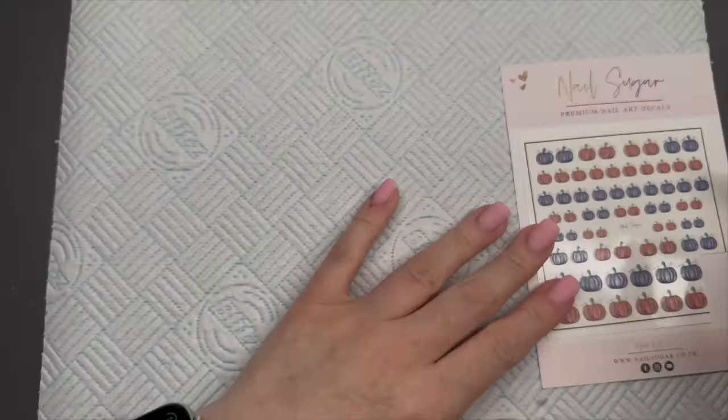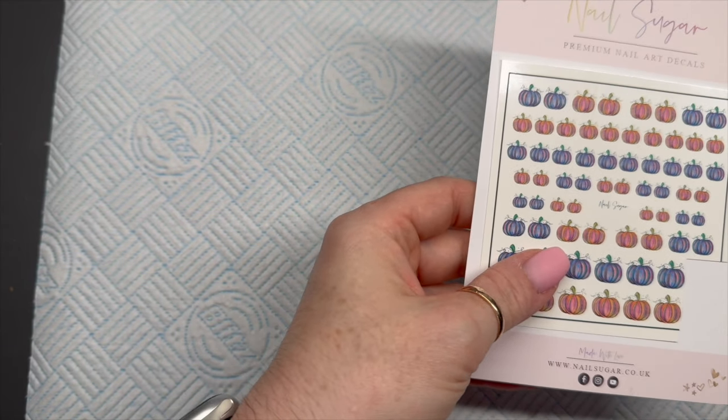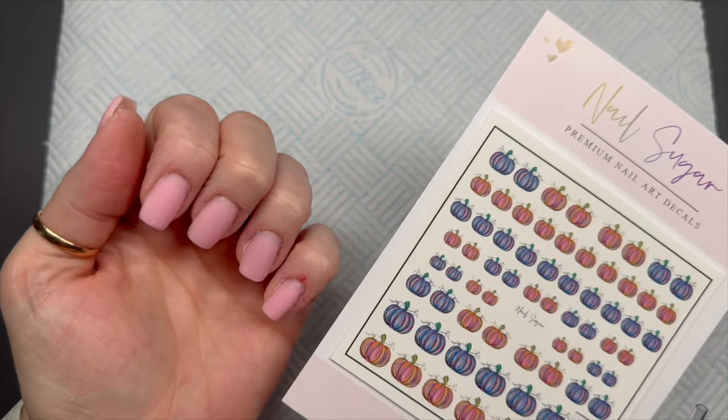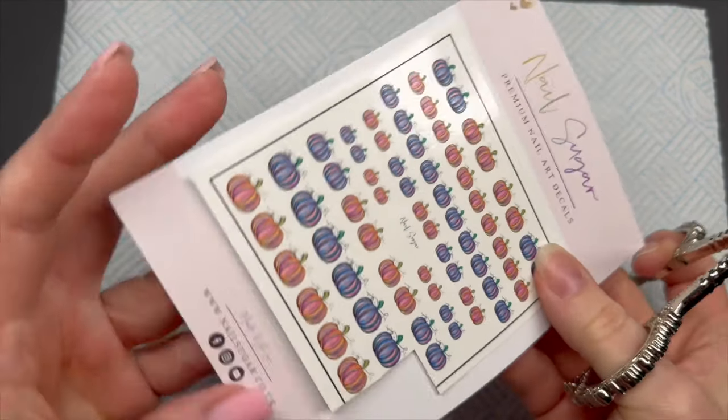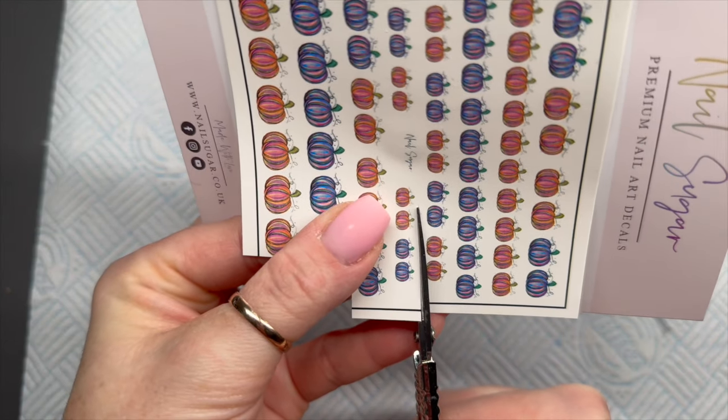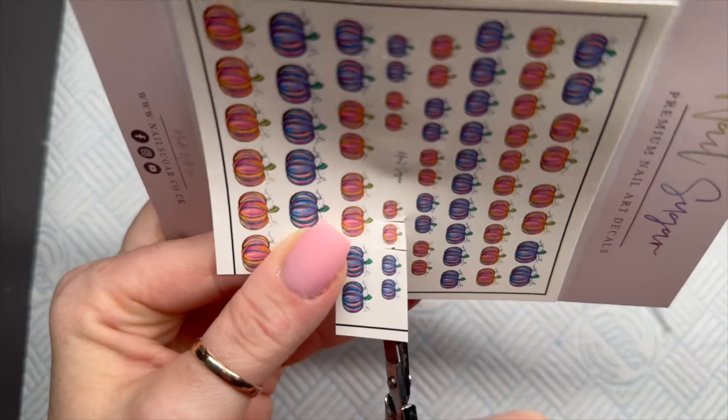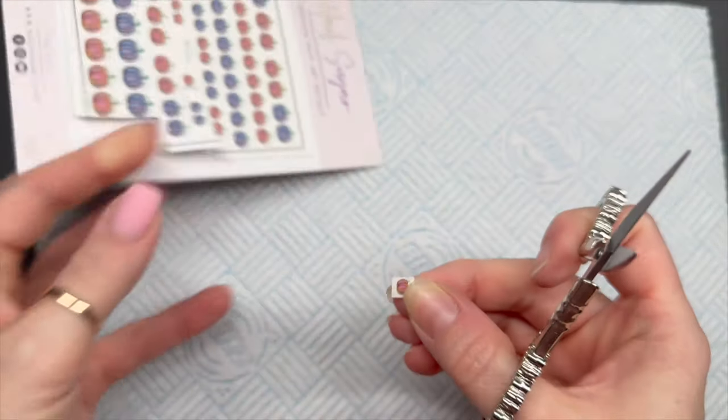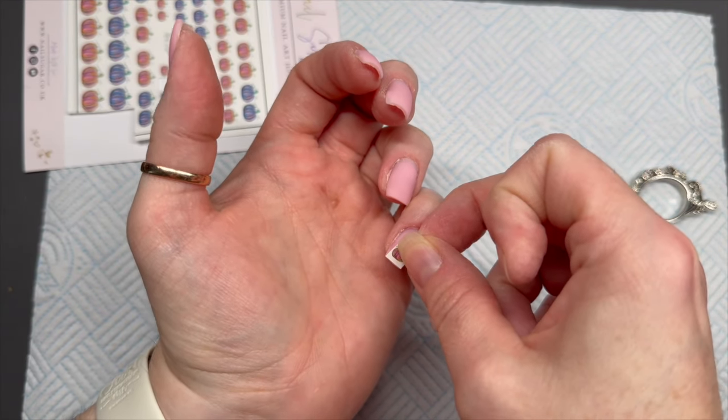Then we're going to pick our decals. I decided I was going to have three. It took me a little while to decide, but I'm going to put one on my pinky. Because my pinky is quite small, obviously I'm going to pick one of the smaller decals for my pinky.